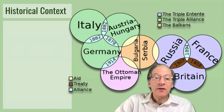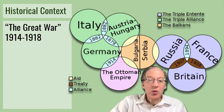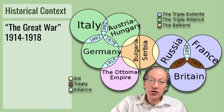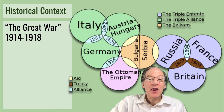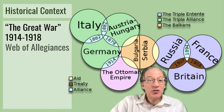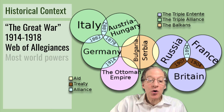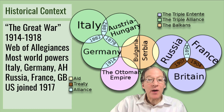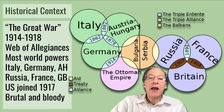In the global context, the Great War — as we know it is World War I — started when a Serbian assassinated the Archduke of Austria-Hungary, and Austria-Hungary declared war on Serbia. Due to this complex web of allegiances with all these treaties and allies, most of the world's powers were drawn into the war. In 1917, the U.S. joined on the side of the Allies: Russia, France, and Britain.